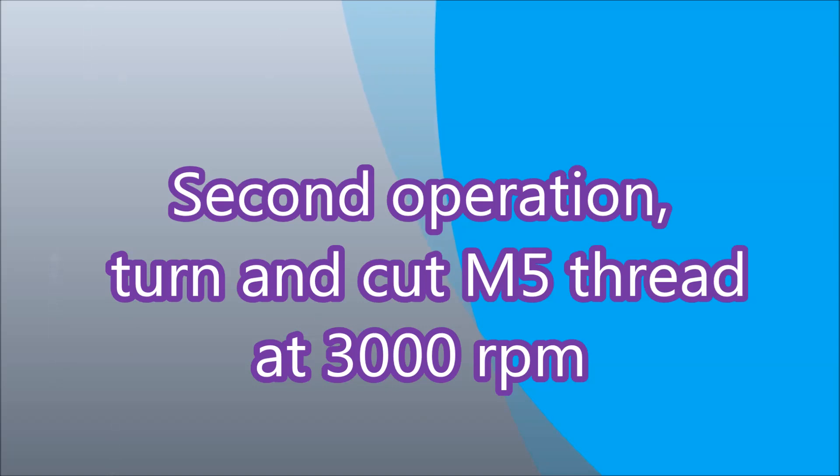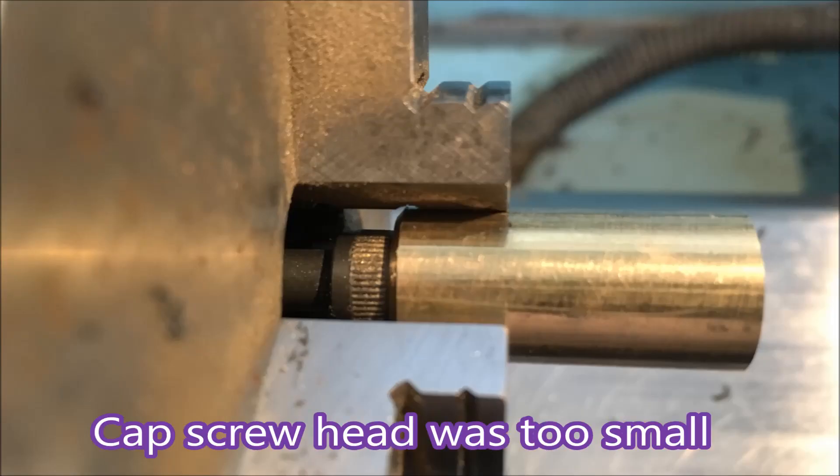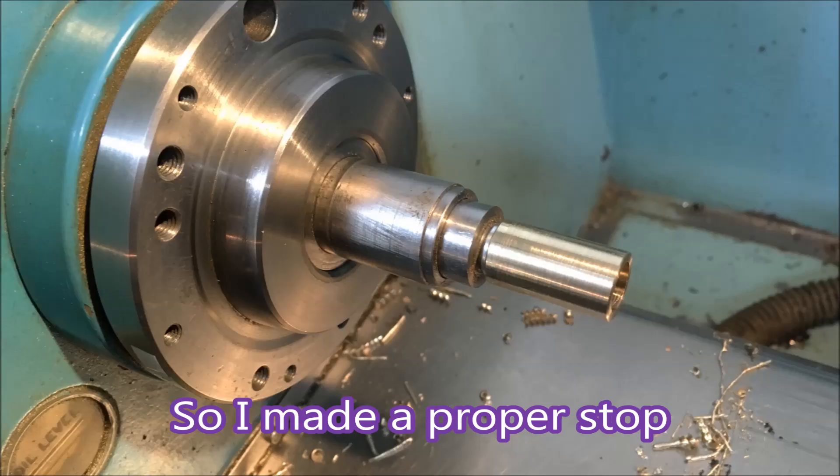Second operation, different lathe. That screw is in an arbor but it was too small. The head was falling into the hole partially so I turned up another piece of brass to make a proper stop for it and you can see there the arbor in the spindle.